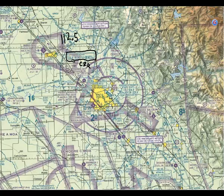Every time you go to use this navigation transmitter, you tune to 112.5, then turn up the volume on the navigation radio — not the communication radio — and listen for that Morse code, then turn it back down. You'll notice that around that transmitter is what's called a compass rose.